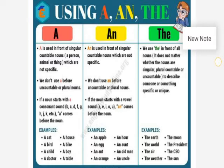The weather, the moon, the president, the CEO, the sun. When we know what we are talking about, if we are very sure what we are talking about, we use the article the. For example, the earth — there is only one earth, and we know which earth we are talking about because there is only one, so we use the.